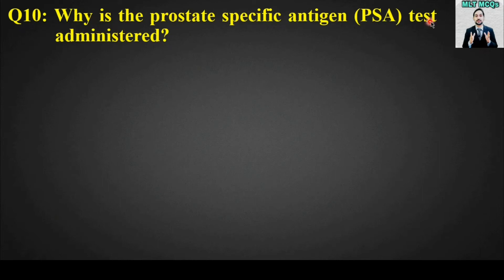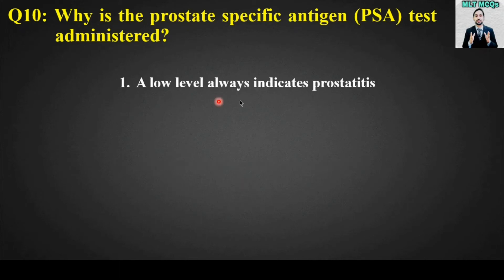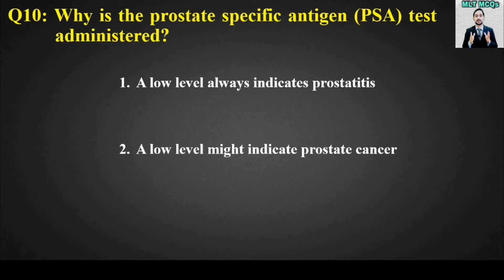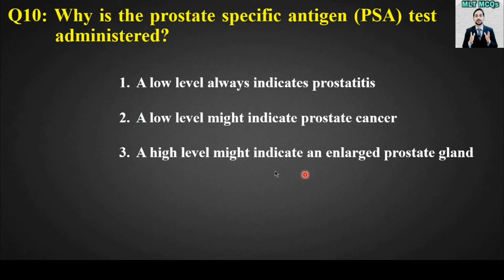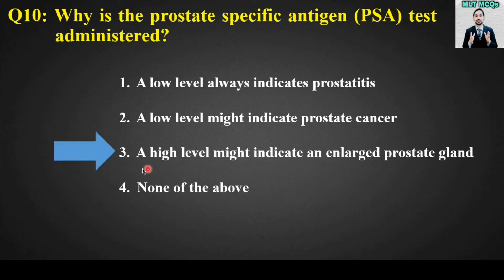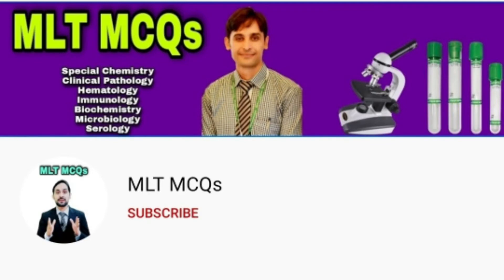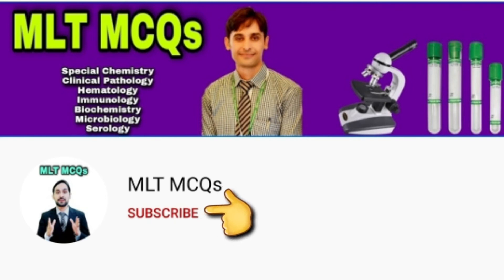MCQ number ten: Why is the prostate specific antigen test administered? Options: a low level always indicates prostatitis; a low level might indicate prostate cancer; a high level might indicate an enlarged prostate gland; or none of the above. The right answer is option number three: a high level might indicate an enlarged prostate gland, so for this purpose the PSA test is administered.